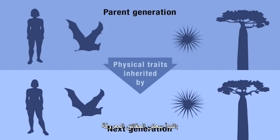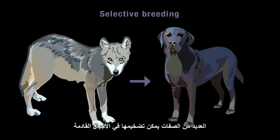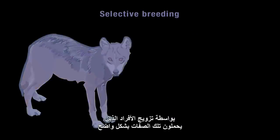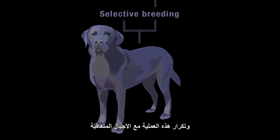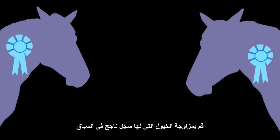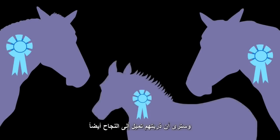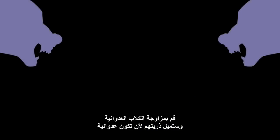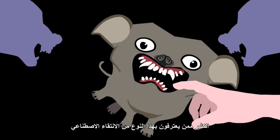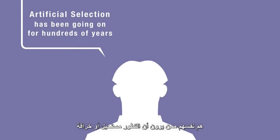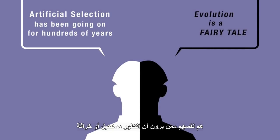To start with some well-known facts: we know that physical traits of parent lifeforms are inherited by the next generation, and that through the artificial process of selective breeding, many traits can be exaggerated in later generations. This can be achieved fairly simply by mating together individuals that exhibit those traits most strongly and repeating this process with successive generations. Breed only from horses with good competition records and their offspring will tend to perform well also. Breed only from aggressive dogs and their offspring will tend to be aggressive. Many who happily acknowledge this kind of artificial selection are the same people who label evolution impossible or a fairy tale.